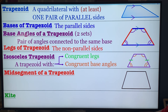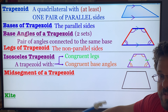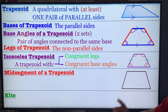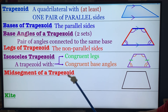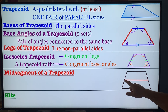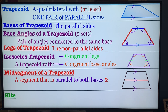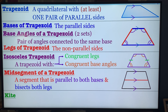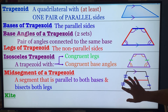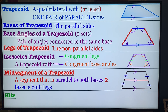The mid-segment: 'mid' means middle, and a segment is a line with a start and end point. So it's the line that runs through the middle of the trapezoid. For it to be the mid-segment, two things must be true: it's parallel to both bases, and it bisects both legs. That means these two pieces on each leg are congruent — it cuts both legs in half, making it the halfway point of the legs.